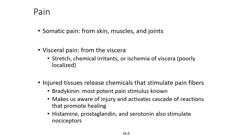Pain can also be categorized by origin. Somatic pain originates in skin, muscles, and joints, whereas visceral pain comes from the viscera — the internal organs. Visceral pain is most often caused by stretch, chemical irritants, or ischemia of the viscera and is generally poorly localized. Injured tissues release chemicals that stimulate pain fibers — bradykinin is the most potent pain stimulus known, making us aware of injury and activating a cascade of reactions that promote healing. Nociceptors can also be stimulated by histamine, prostaglandin, and serotonin.